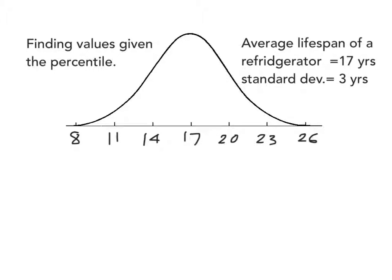Moving on to the next topic, let's talk about the same information but in reverse. Suppose we were interested in the amount of lifespan in the worst 20% of refrigerators. In other words, I know that the area under the curve is 20%, and I want to know what value would be on the border of those cheap refrigerators and the ones that actually last longer. I could use a different command on the calculator — pressing second VARS brings up the distribution choices and you're going to choose inverse norm.